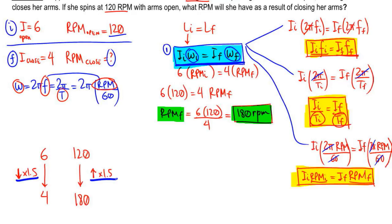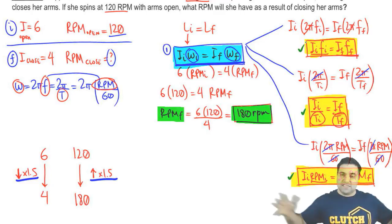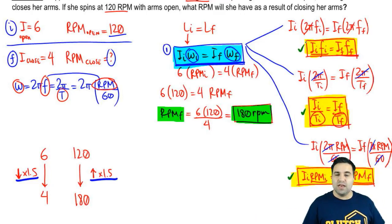All right. So that's it for this one. This question is actually really easy. I just took a little longer because I wanted to do a little bit of analysis and I wanted to introduce you to these three alternative versions of the conservation equation so you can solve some of these questions faster. That's it for this one. Let me know if you need any help, if you have any questions. And let's keep going.